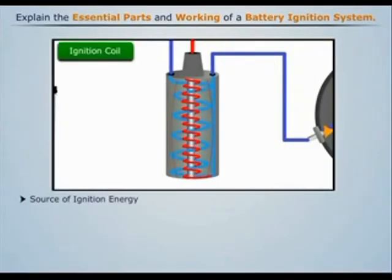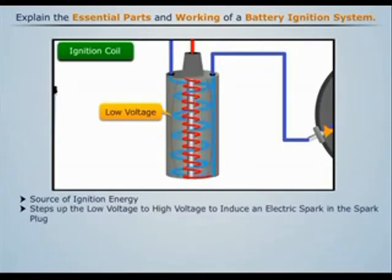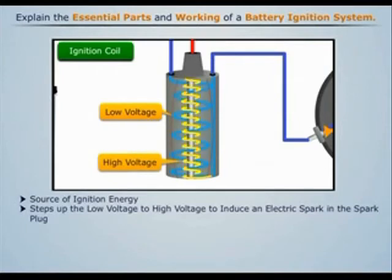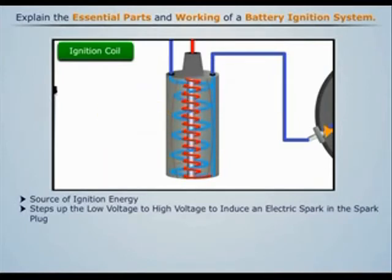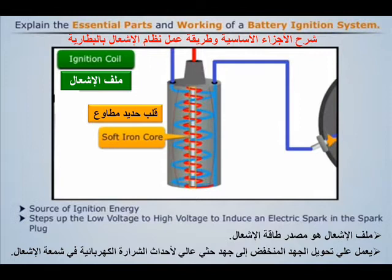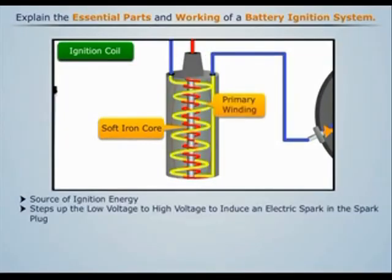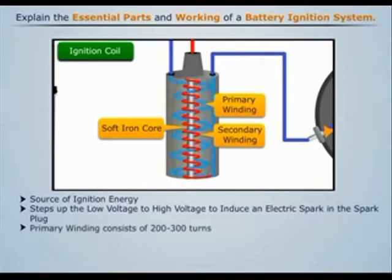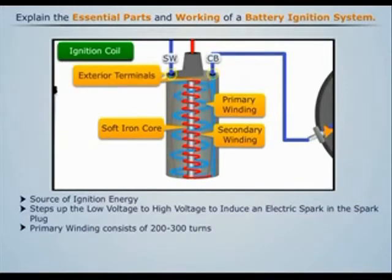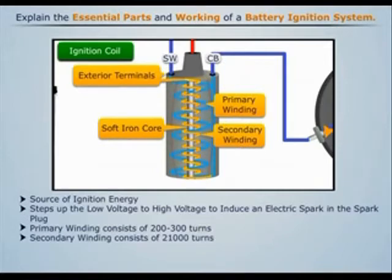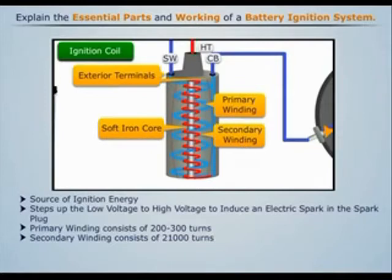The ignition coil is the source of ignition energy. Its function is to step up the low voltage to the level required for inducing an electric spark in the spark plug. It consists of a magnetic soft iron core, with two coils known as primary and secondary windings. The primary winding consists of 200 to 300 turns with both ends connected to exterior terminals. The secondary winding consists of 21,000 turns, with one end connected to the high tension wire that goes to the distributor and the second end connected to the primary coil.